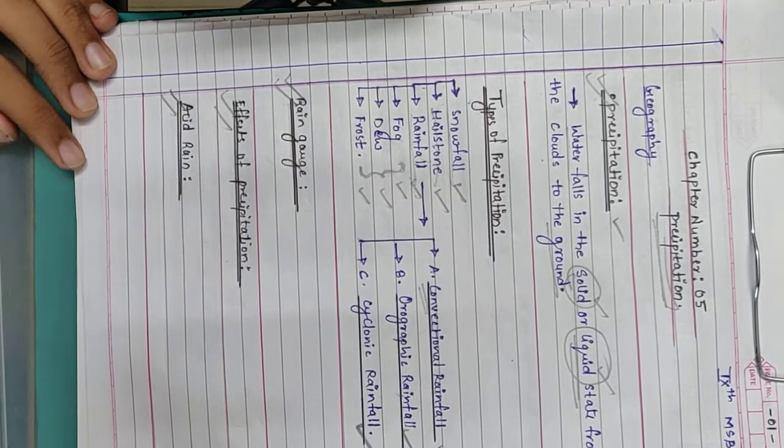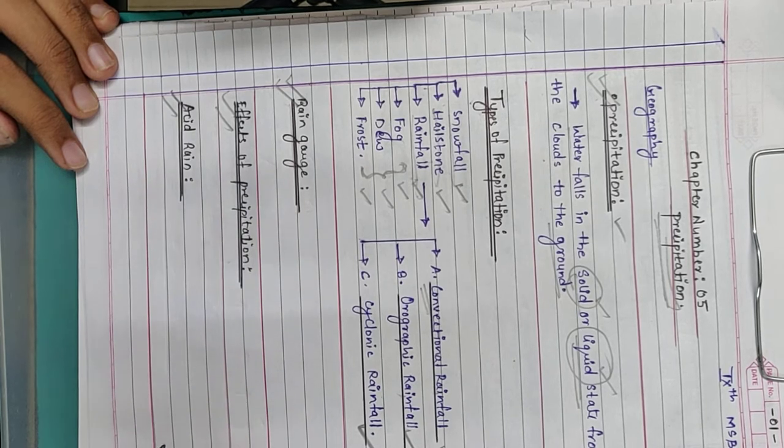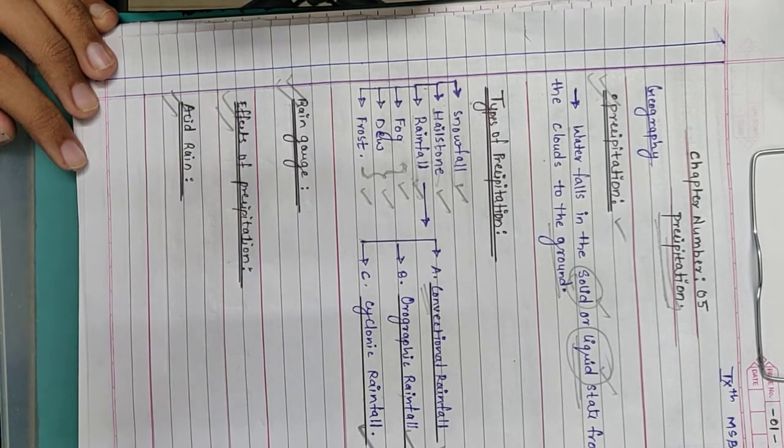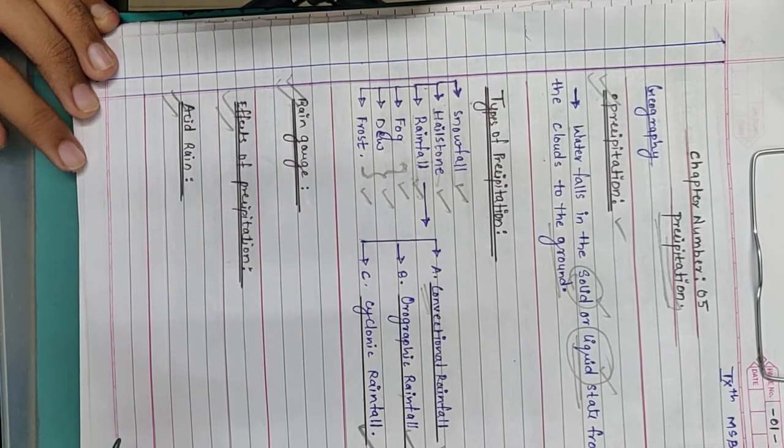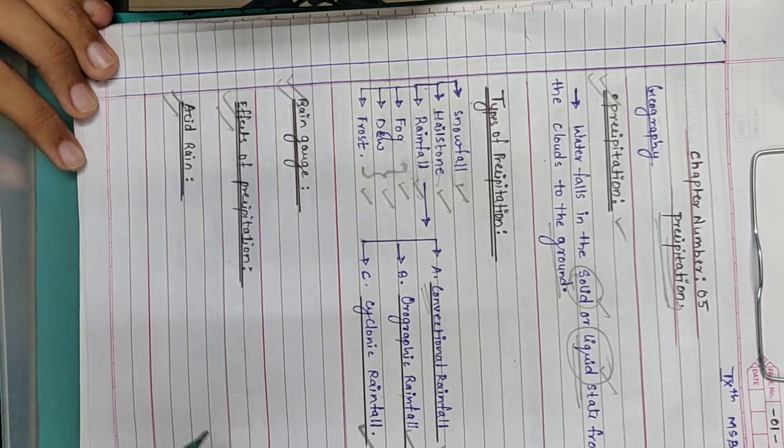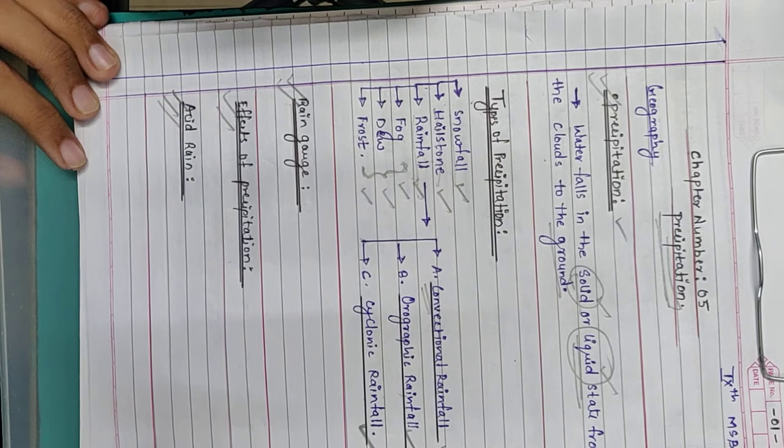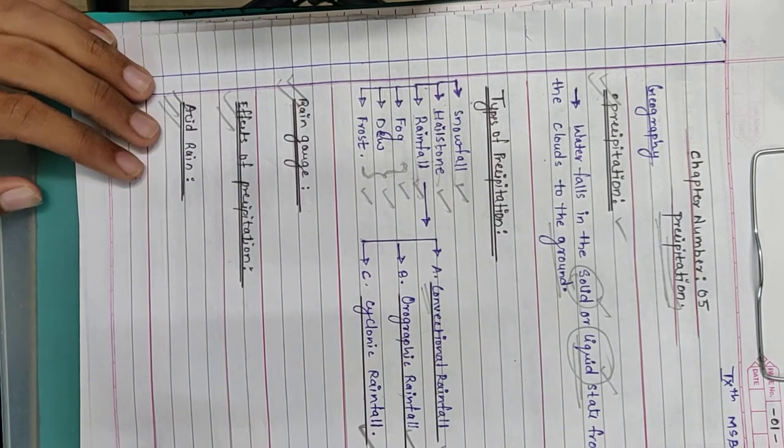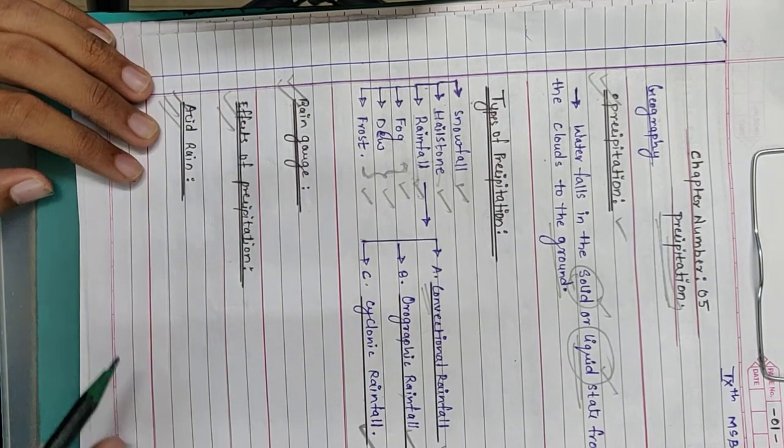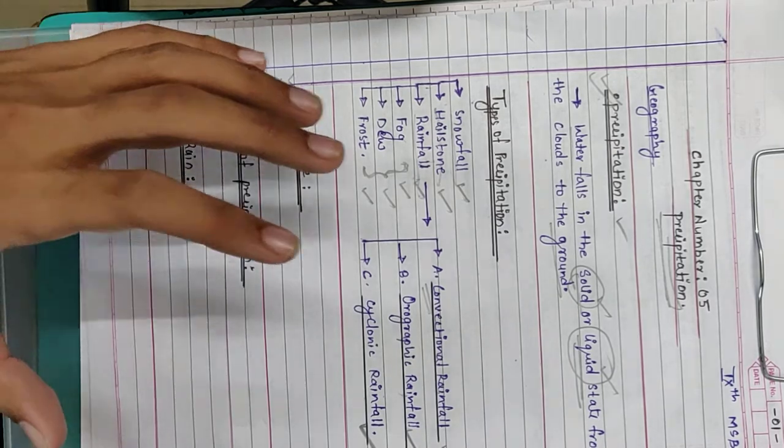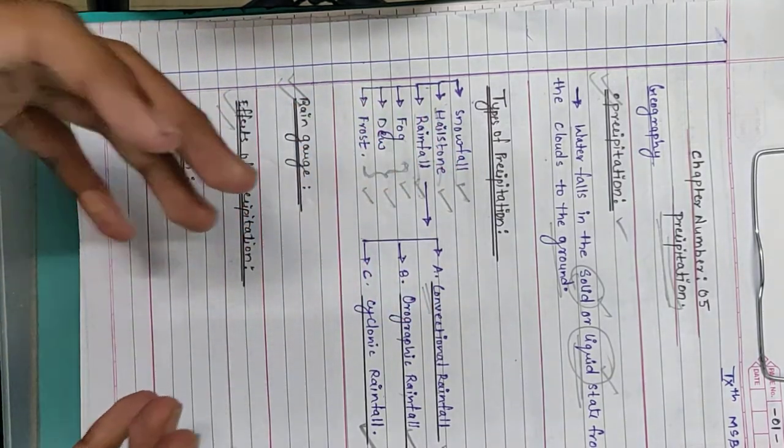The last topic for our chapter is acid rain. We are going to learn about acid rain, how acid rain occurs, what are the main functions, advantages and disadvantages, and what are the major disadvantages of acid rain. Since it is acid, there are lots of disadvantages of acid rain. We will study this in the full chapter.